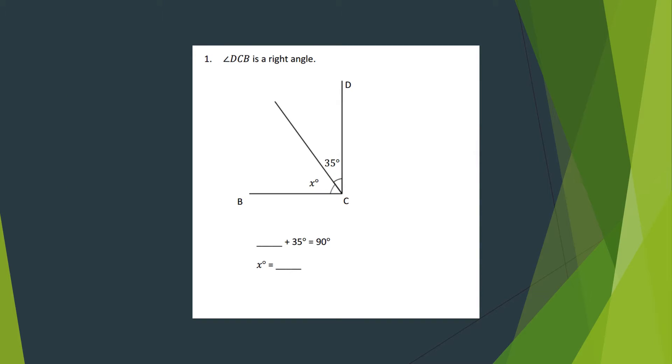Today we're going to focus on using addition and subtraction of adjacent angle measures to solve problems using a symbol for the unknown angle measure. In math, we call that symbol or letter a variable.